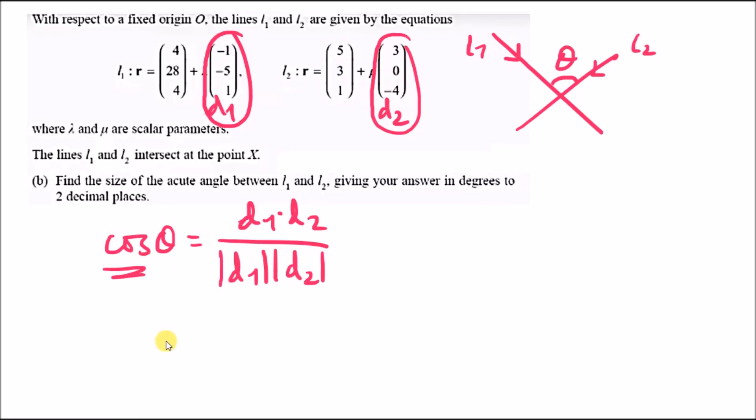There is a special formula: cos theta equals the dot product between the two directional vectors over the magnitude of each one. The magnitude uses 3D Pythagoras on a direction. Because it's intersecting, the acute angle could be in any position. If the answer isn't acute, it'll be 180 minus the answer.